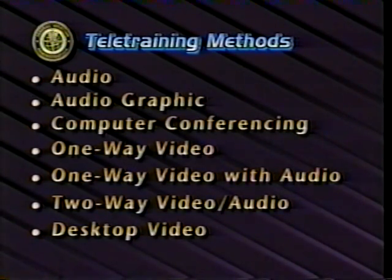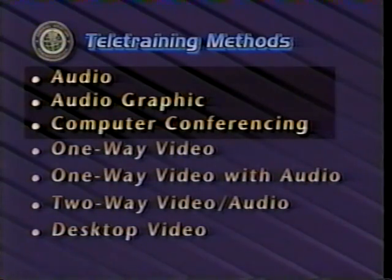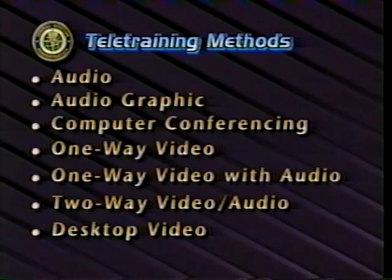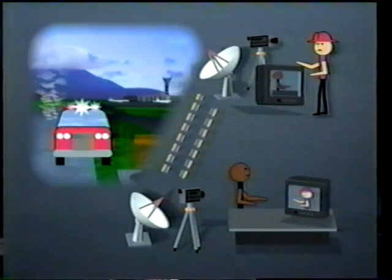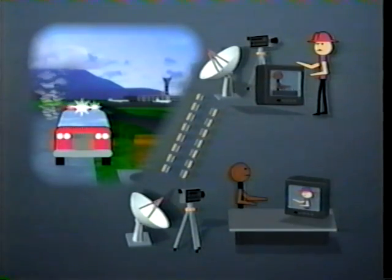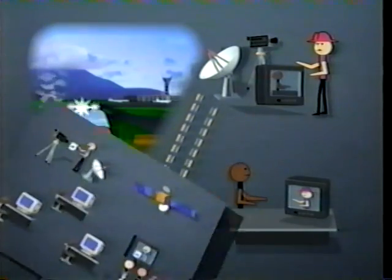Remember that these teletraining methods can be combined in various ways. Audio only, computer, and audio graphics conferencing are the most affordable ways to connect people together, and you can use any of these as a supplement to one of the broadcast modes. For example, in the event of an air accident, the FAA might require a fully interactive capability to analyze the incident — a two-way system can be used for incident reporting, planning, and technical analysis, and these sessions can be recorded on videotape and used for training.